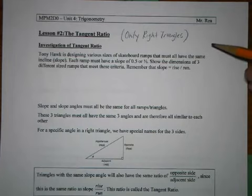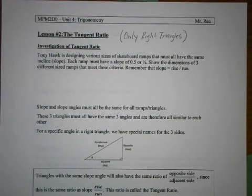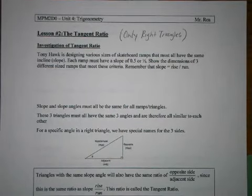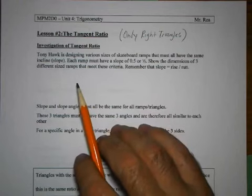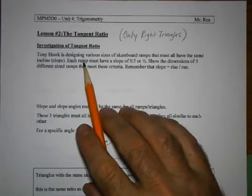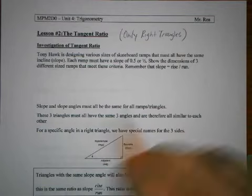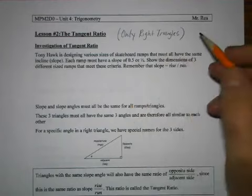Let's start with an example. Tony Hawk, the god of skateboarding, is designing various sizes of skateboard ramps, and they must all have the same slope or incline. Each ramp must have a slope of 0.5, or rather 1/2. We want to come up with different size ramps that have the same slope. We're not doing slopes on an x-y grid — just ramps you could draw triangles for.